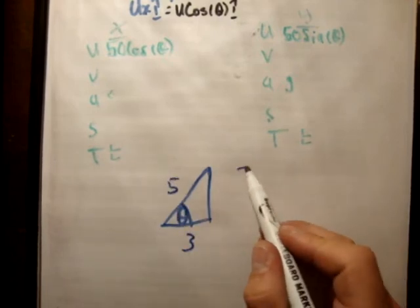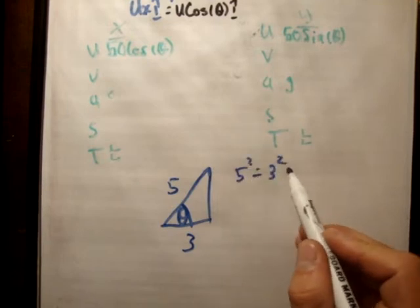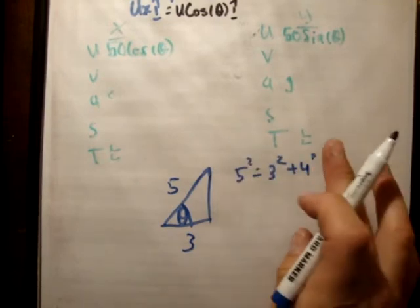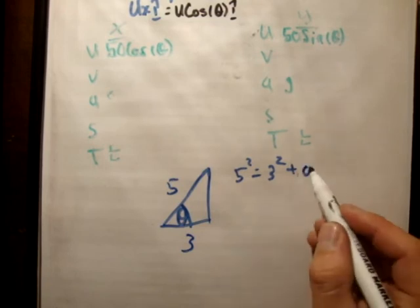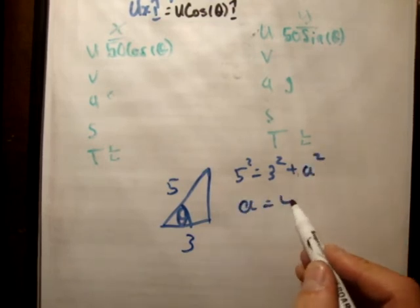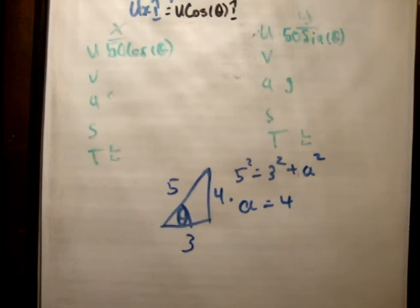So in order to get the opposite, we use Pythagoras, so 5 squared is equal to 3 squared plus A squared. And you're going to find that A is equal to 4. So therefore, the sine is equal to 4 fifths, and the cosine is equal to 3 fifths.